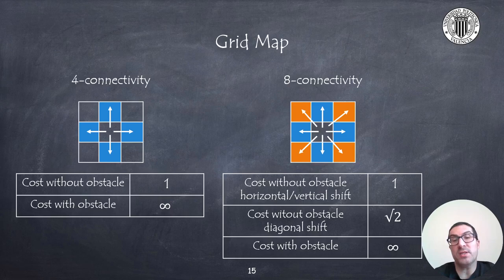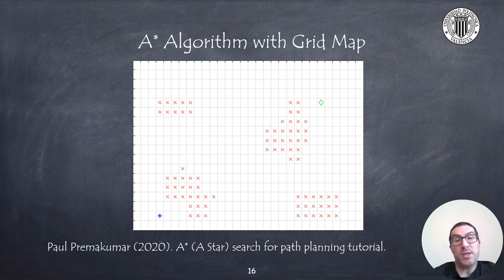If the cell is occupied with an obstacle, then we can use an infinite cost, so that the route calculation algorithm never visits that cell.